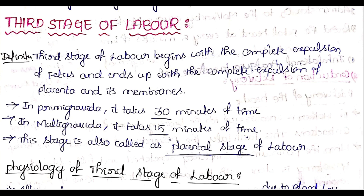Previously, the introduction to labor and the first stage and second stage of labor were covered. The third stage of labor begins with the complete expulsion of the fetus and ends with the complete expulsion of the placenta and its membranes. This stage is called the placental stage of labor.